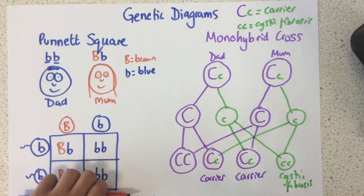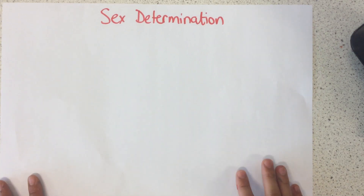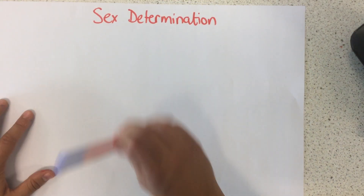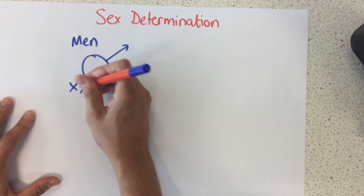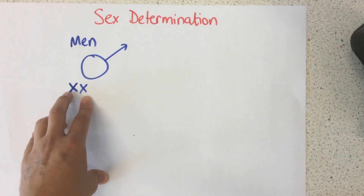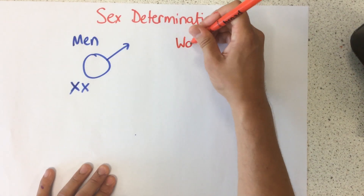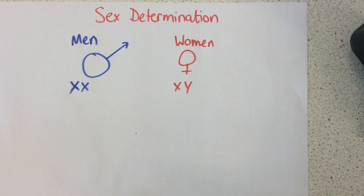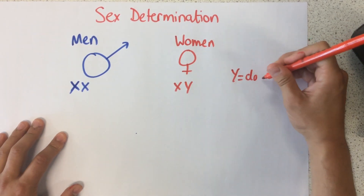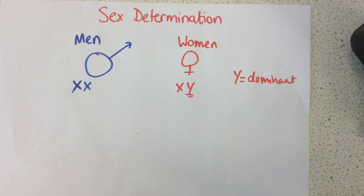I'm going to show you one more thing: how sex can be determined using a Punnett square. Men have the sex chromosomes XX — two X chromosomes on the 23rd chromosome pair. Whereas women have an X and a Y chromosome. The Y chromosome is dominant, which means we only need one Y chromosome in order for the offspring to be female.